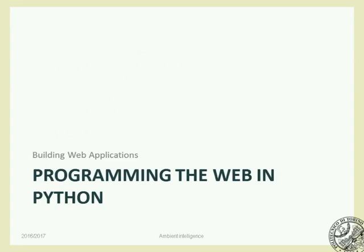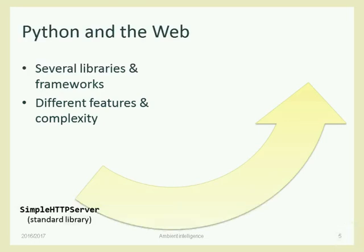If you go to a bookstore and look for books on programming web applications, most of the time that section will be about PHP or JavaScript. Python is not one of the most popular ones, but it can be used, and there are some important libraries for that. Actually, in the standard Python library there is already a simple class called SimpleHTTPServer that implements the server side of the HTTP protocol — it listens for HTTP requests from different browsers and replies with an HTTP response message.